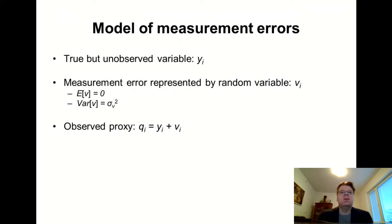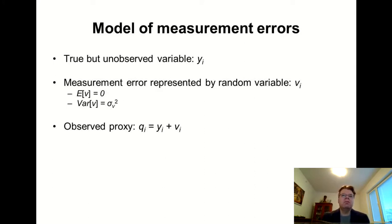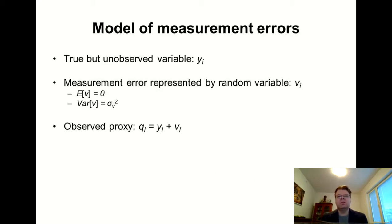To understand this formally, we need a formal model of measurement errors. In econometrics, we usually think about the measurement error as a random variable, which I indicate by variable V. I assume that V has zero mean and a constant variance. The interpretation of V is very similar to the epsilon in our regression models — you can think of V as similar to epsilon, just some measurement error that is perturbing our dependent variable Y or our explanatory variable X.